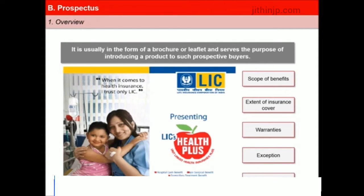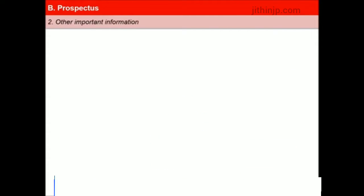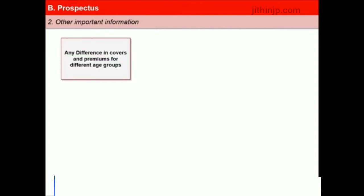The allowable riders on the product should also be clearly stated with regard to their scope of benefits. The premium related to all the riders put together should not exceed 30% of the premium of the main product. Other important information which a prospectus should disclose includes any differences in covers in premium for different age groups or for different entry ages.